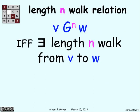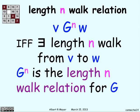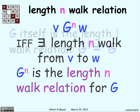Now we're going to talk about the length n walk relation. With two vertices v and w, there is this G^n relation between v and w if there exists a length n walk from v to w. G^n is called the length n walk relation for G. Basically, if you can find a way to go from v to w in exactly n steps, then G^n applies from v to w.